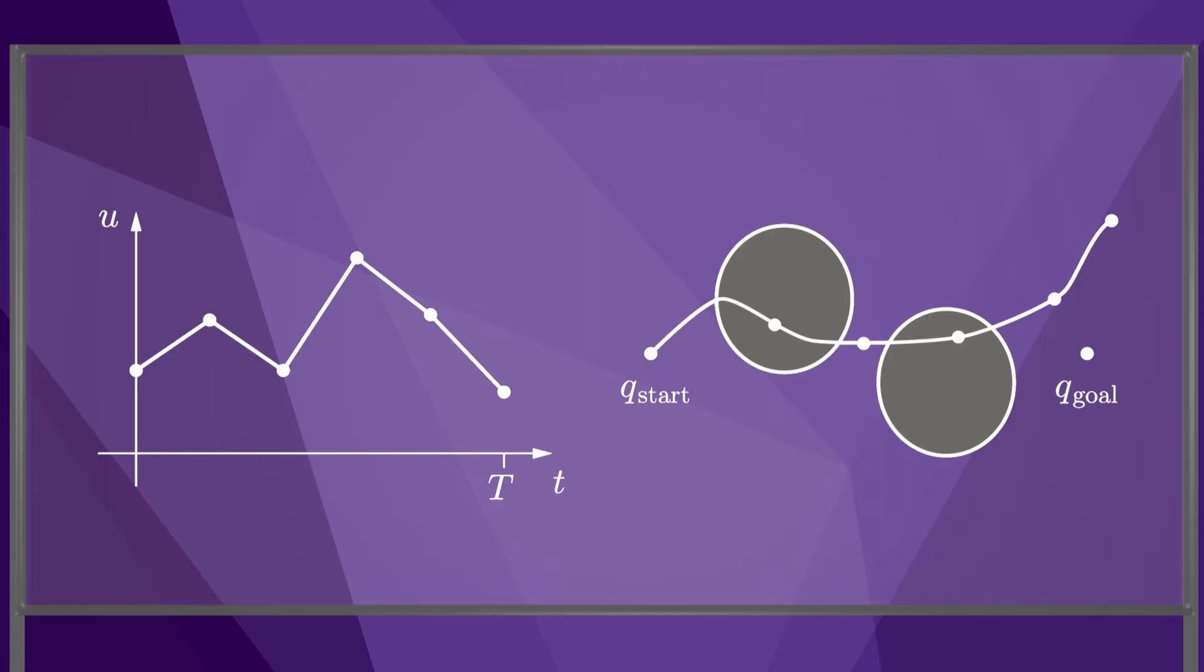To update our guess at the control history, we need to calculate the gradients of the constraints with respect to the trajectory. These gradients provide information on how the test point should move to satisfy the constraints. These gradients map through the gradients of the trajectory with respect to the controls to suggest a direction in which to modify our guess at the control history. We also use information on the gradients of the cost with respect to the controls in calculating the direction to update our control history. We then update the control history and integrate the new control to get an updated trajectory.